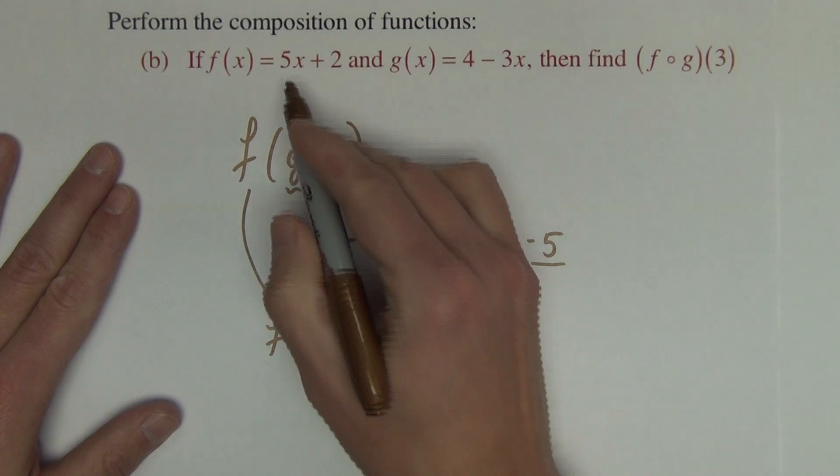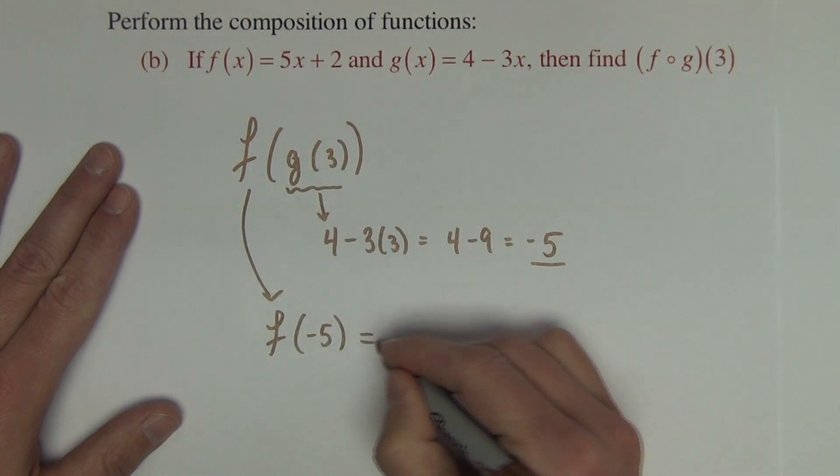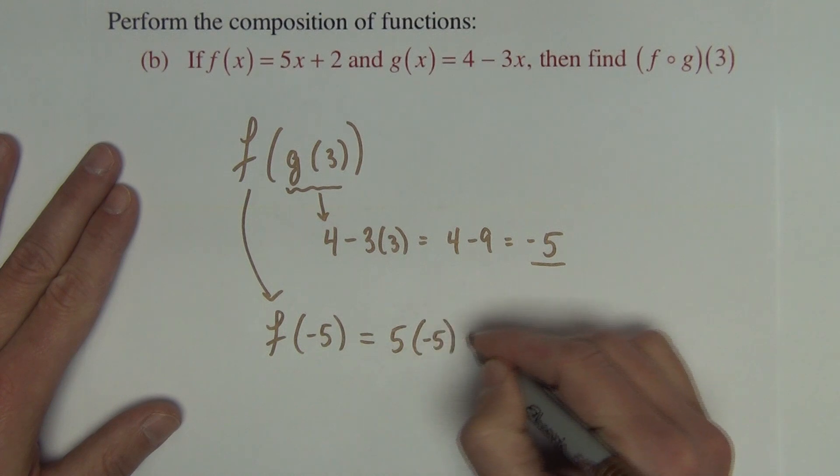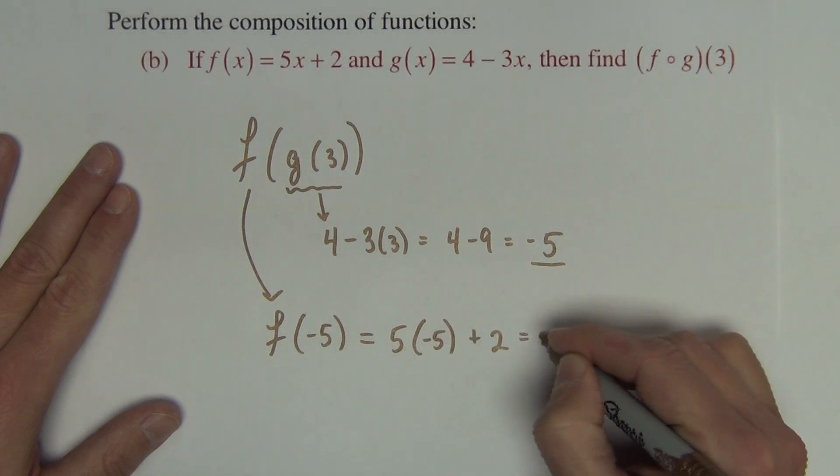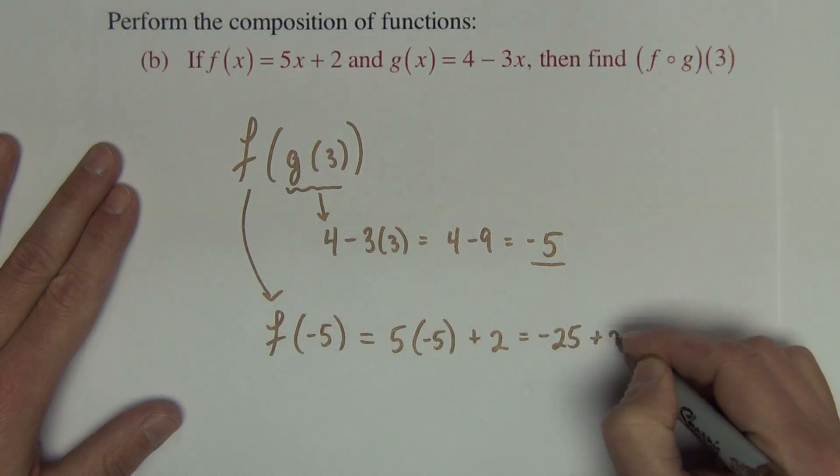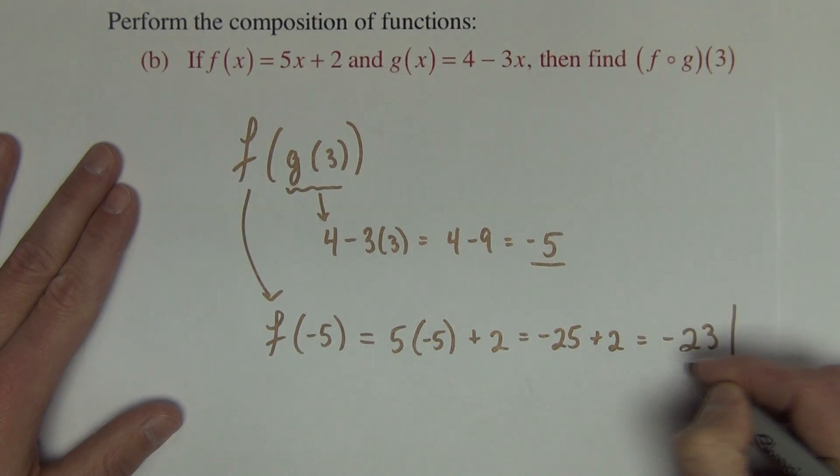And now we want f of g of 3. And g of 3 is negative 5. So we're putting negative 5 in for x. And so that's 5 times negative 5 plus 2, which is negative 25, plus 2, which is negative 23.